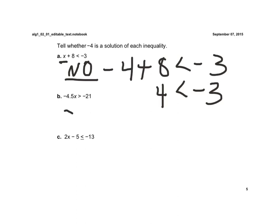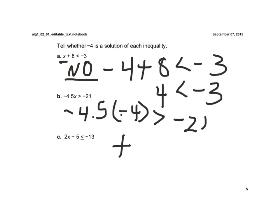Here we have negative 4.5 times negative 4, which has to be greater than negative 21. A negative times a negative is going to be a positive. In this case, it's going to be positive 18, which is greater than negative 21. Any positive number is always greater than a negative number, so this one is yes.